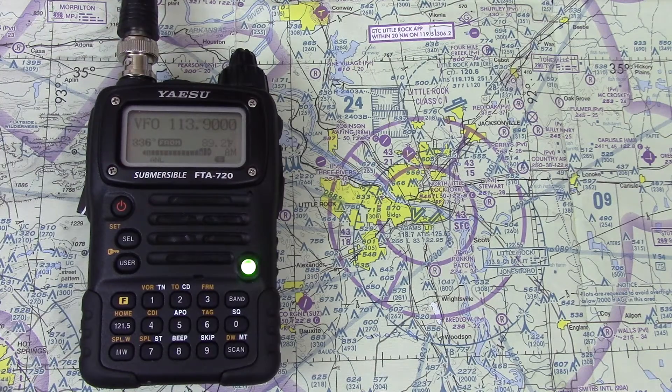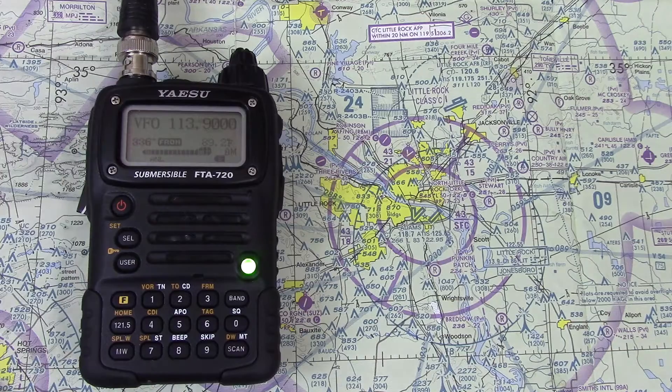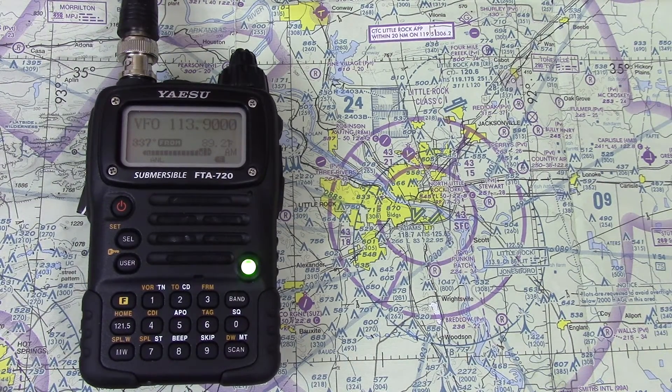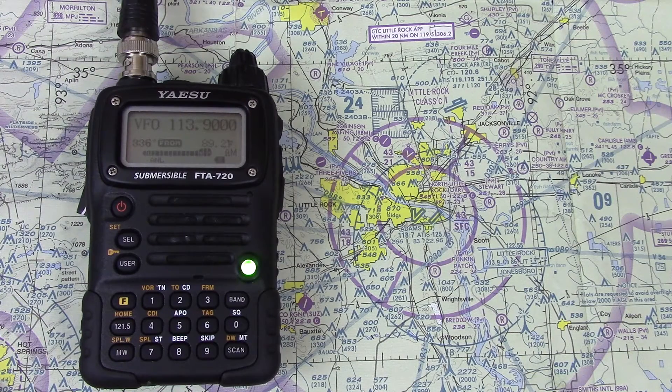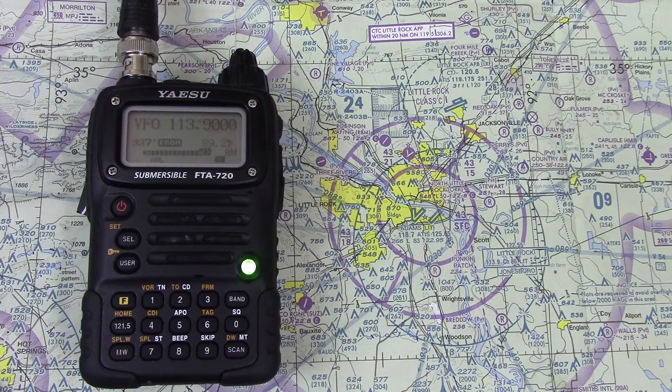Of course we'll have to talk about VORs first, what they are, what they do. In a nutshell, most importantly before GPS came out, airplanes needed some means to navigate from point A to point B. And one of those navigational aids used was a VOR.